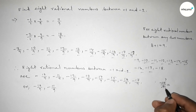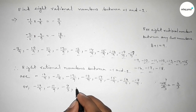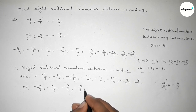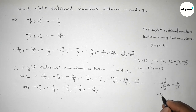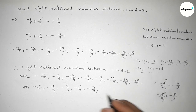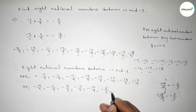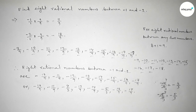So minus 12 over 9 simplifies to minus 4 over 3. Then minus 13 over 9 and minus 14 over 9. Also, minus 15 over 9: if you divide both numbers by 3, you get minus 5 over 3. Then minus 16 over 9 and minus 17 over 9. So this is the process to find 8 rational numbers between minus 1 and minus 2. That's all, thanks for watching.